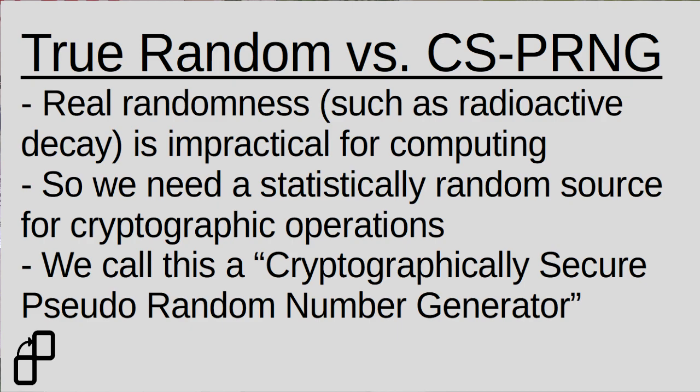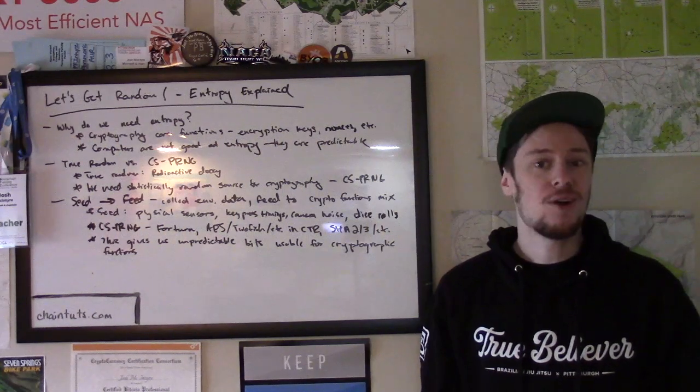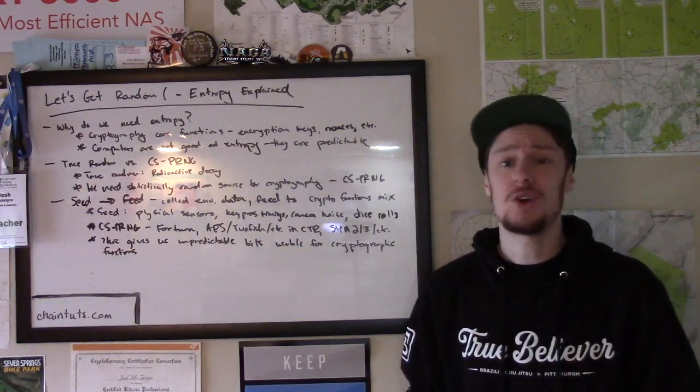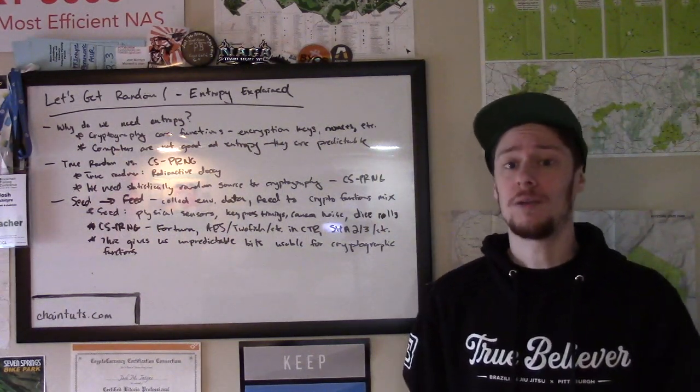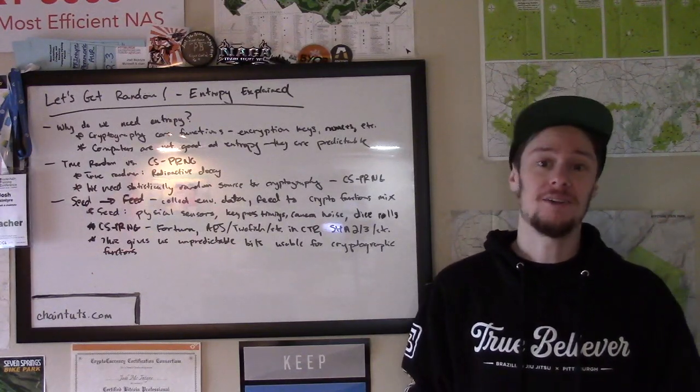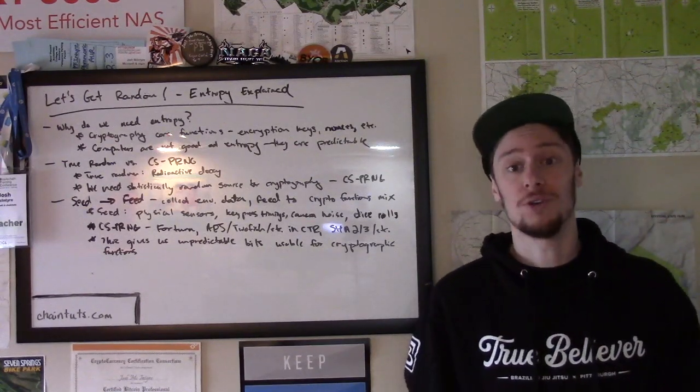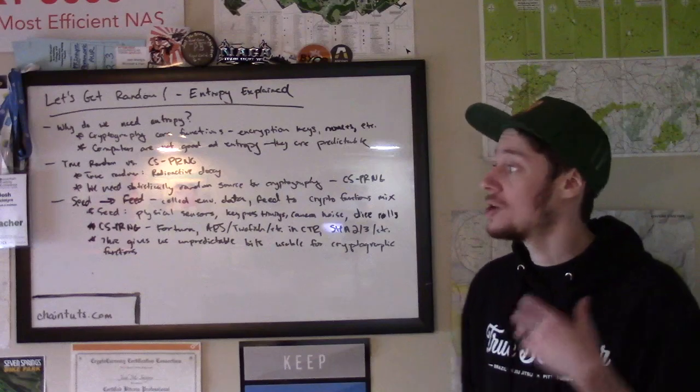There are some things in the universe that by the laws of physics are said to be truly random, things like the behavior of particles in radioactive decay. However, these true random sources are not a practical way to generate random numbers for computers. I mean, imagine if we all had to carry around radioactive elements and worry about our true RNGs breaking in some way that rendered our encryption unsafe.